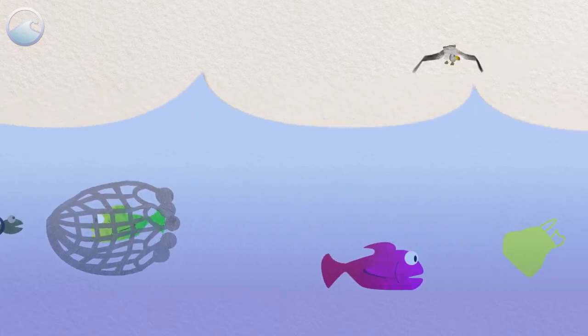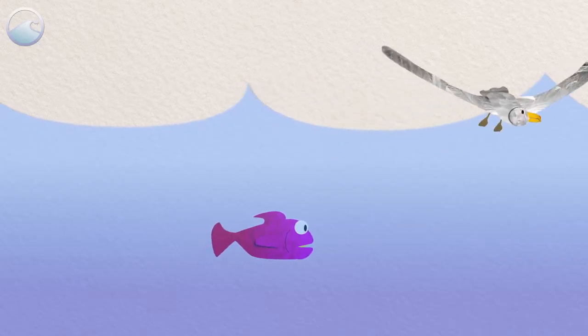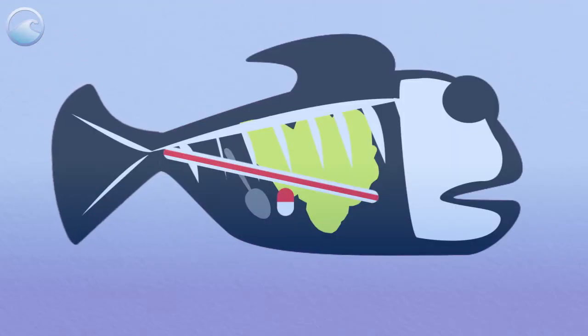And even if they don't get entangled, many animals mistake plastic debris for food and eat it. This fills their stomach with junk they can't digest.